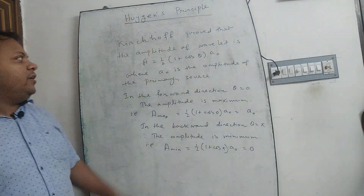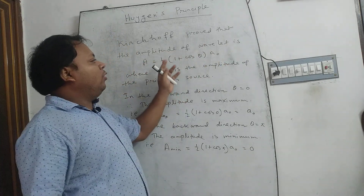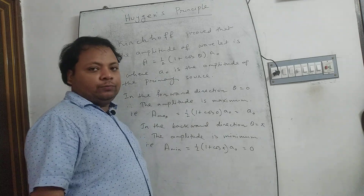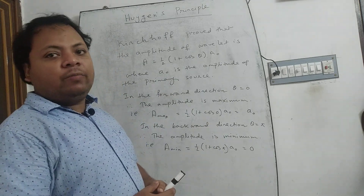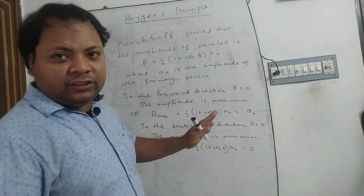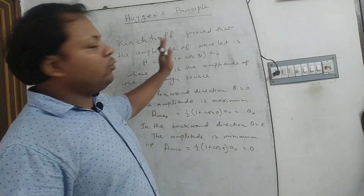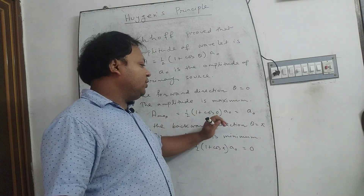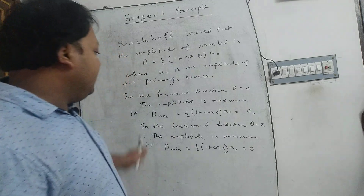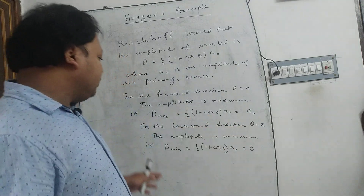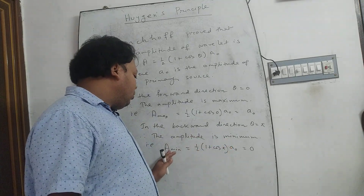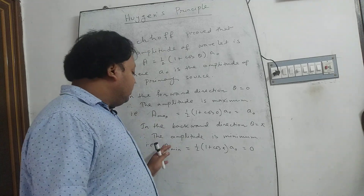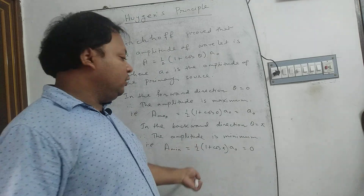Kirchhoff mathematically proved that the amplitude of the wavelet is A = half times (1 + cos θ) times A₀, where A₀ is the amplitude of the primary source. In the forward direction, that is θ = 0, the amplitude of the secondary wave is maximum: A_max = half × (1 + cos 0) × A₀ = A₀. In the backward direction, θ = π, so the amplitude is A_min = half × (1 + cos π). Since cos π = −1, this gives the amplitude of the secondary wave in the backward direction as zero.